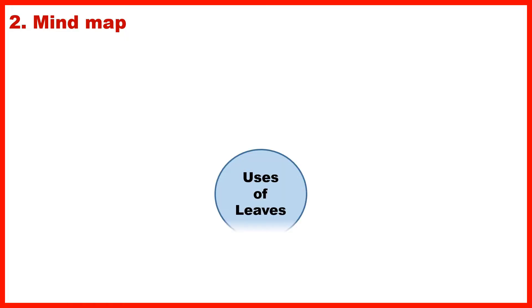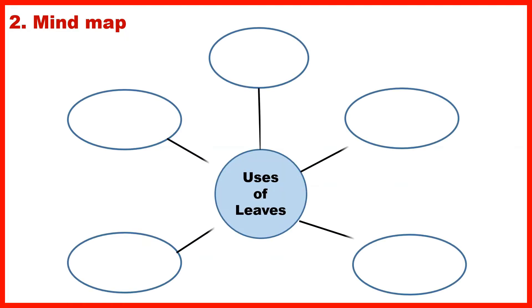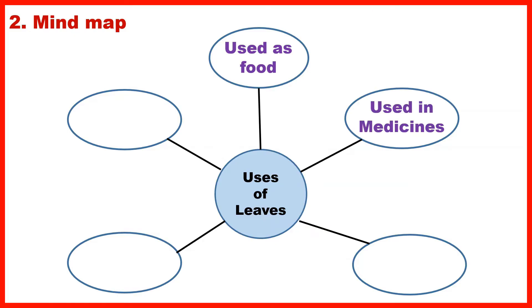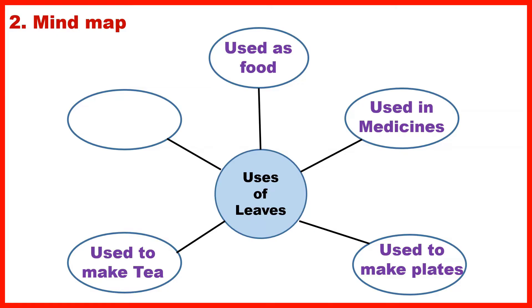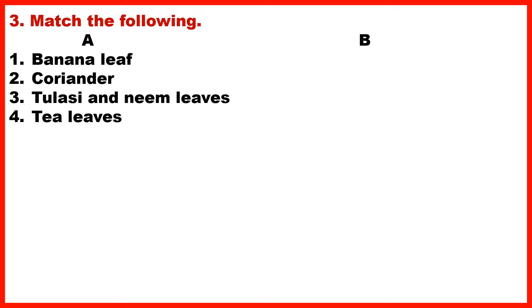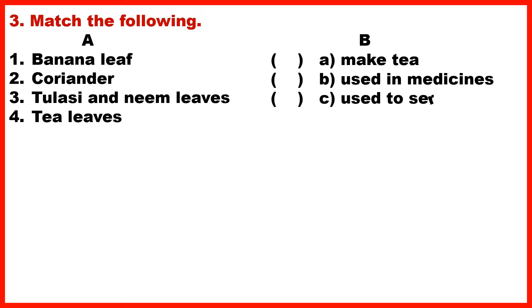Section 2: Mind Map – Uses of leaves: Use as food, Use as medicines, Use to make plates, Use to make tea, Use to decorate. Section 3: Match the following.